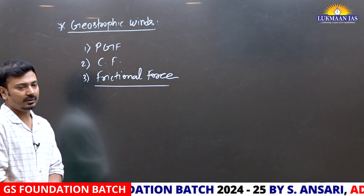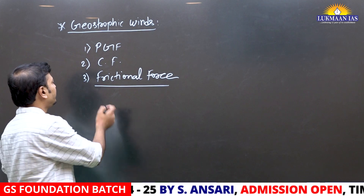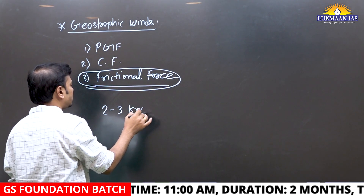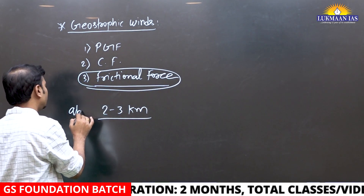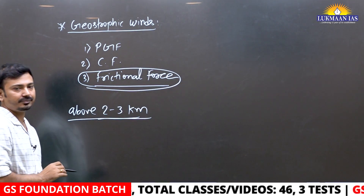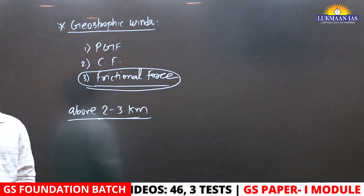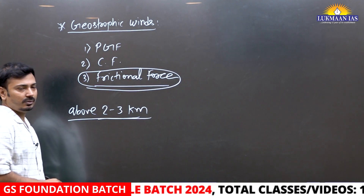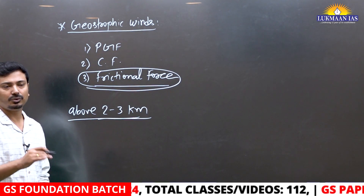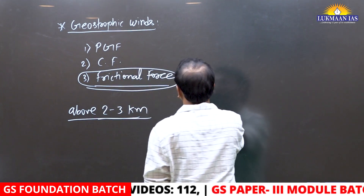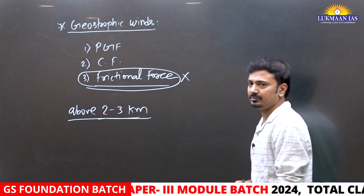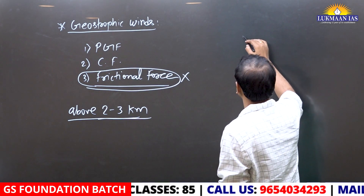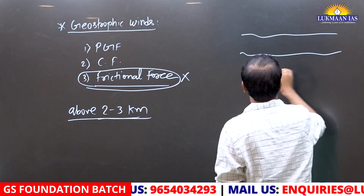When we say there is no frictional force, that means the wind is moving at a certain height — let's say two to three kilometers above the Earth's surface. When the wind is moving at that height, no frictional force acts on that wind.